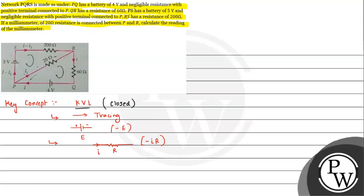Now we need to calculate the reading of the milliammeter, which is connected between P and R with 20 ohm resistance. The current flowing through the milliammeter is I1, and that is what we need to find. So we will take the loop PSRP.